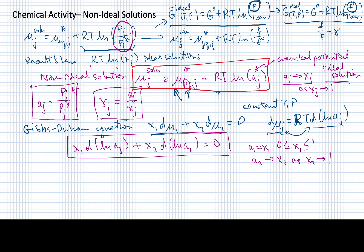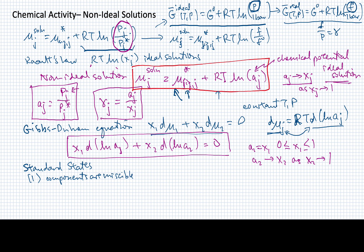With things like chemical potential and chemical activity, we find that these are not well-defined unless we define a standard state for them. In the case of chemical activity, there are two particular definitions that matter a lot. The first case is one we've been tacitly assuming through most of this module — that our components in the mixture are completely miscible, meaning they mix together at all proportions — and we can consider this to be a Raoult's Law standard state.